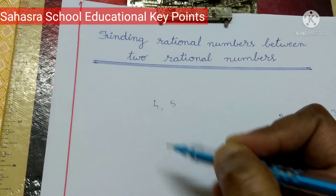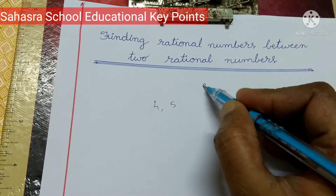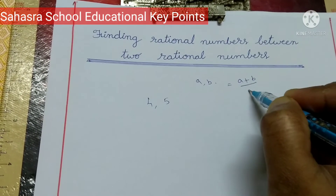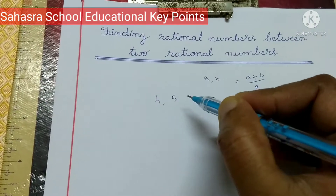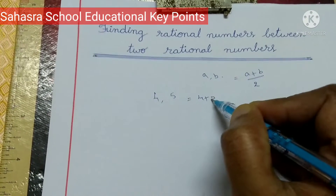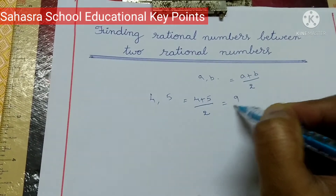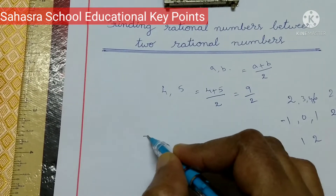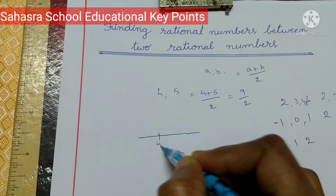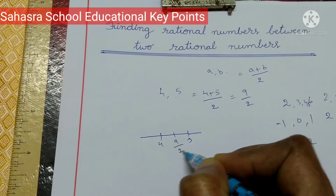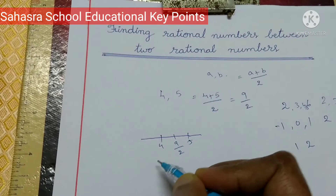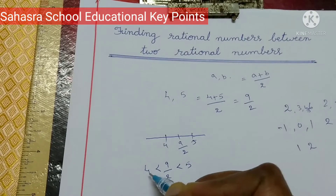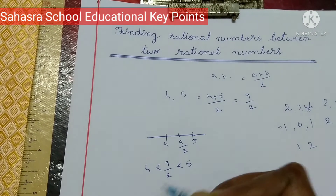Suppose A and B are rational numbers. The rational number between 4 and 5 is found using the mean: 4 plus 5 by 2 is equal to 9 by 2. So 9 by 2 lies between 4 and 5, meaning 4 is less than 9 by 2 is less than 5.